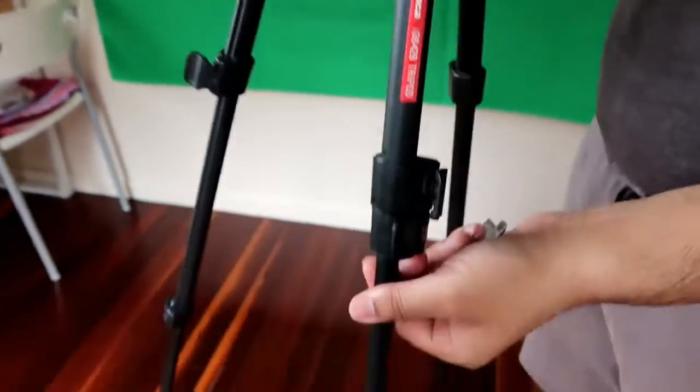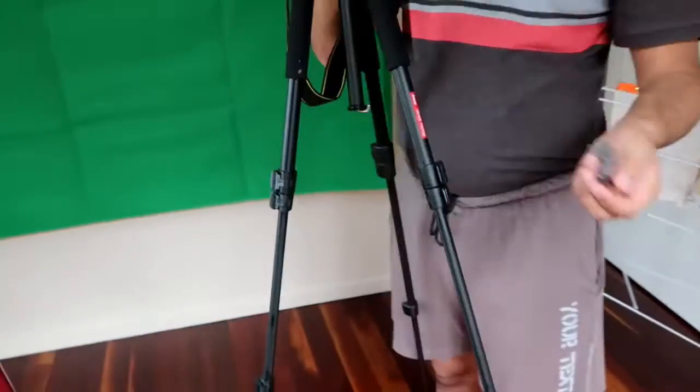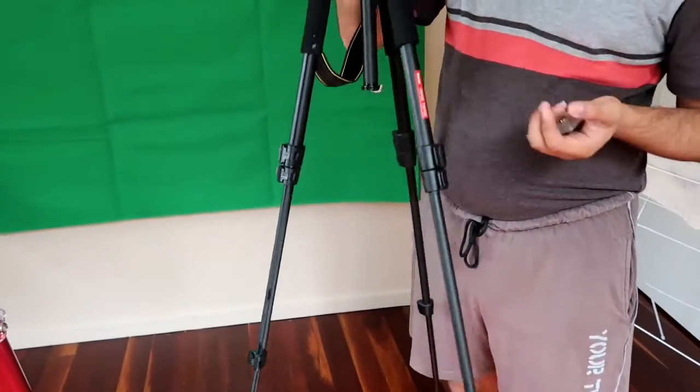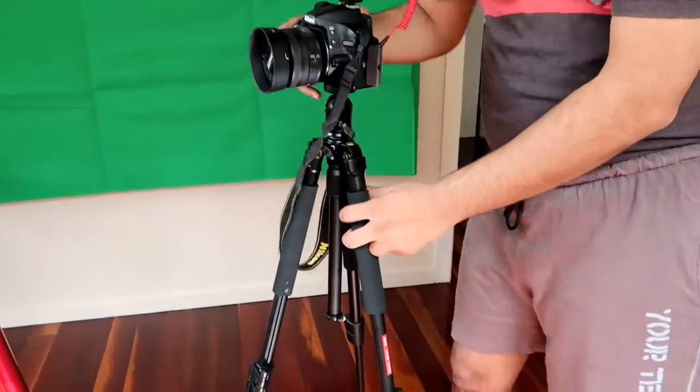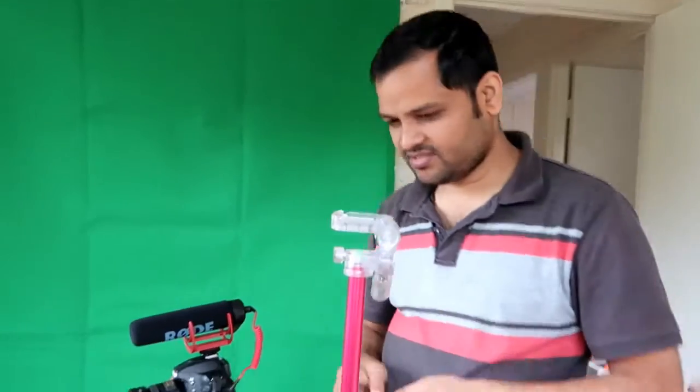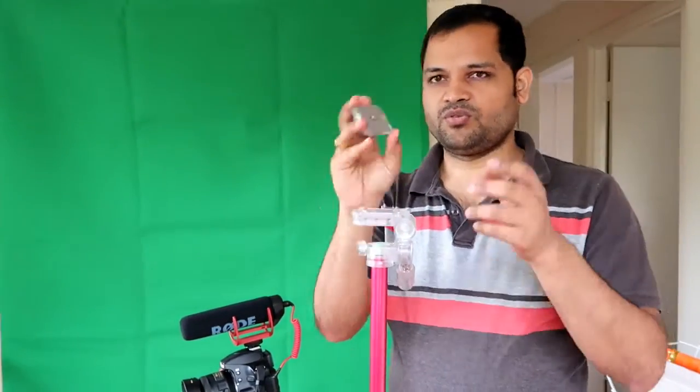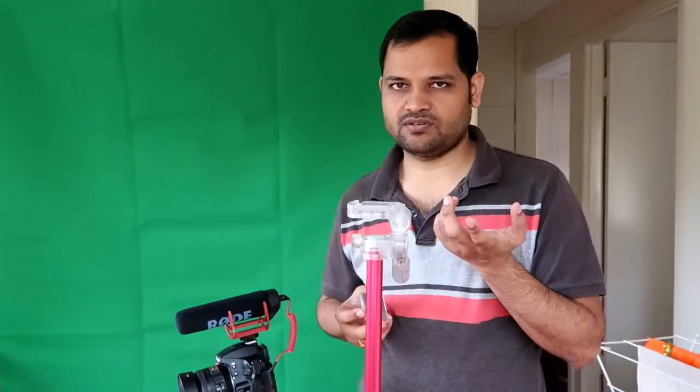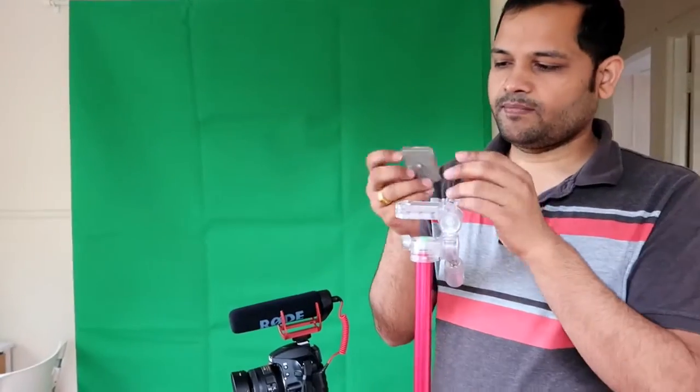You can also adjust the legs of the tripod like that. I use this particular tripod for heavy DSLRs like Nikon D3200. I've got another plastic tripod which is very lightweight, and I use that one for